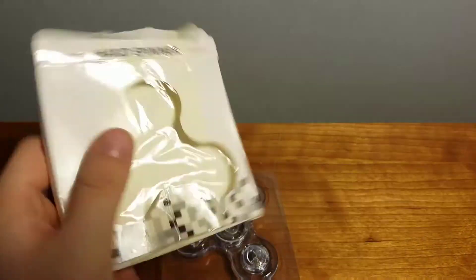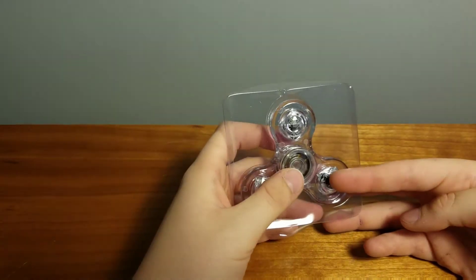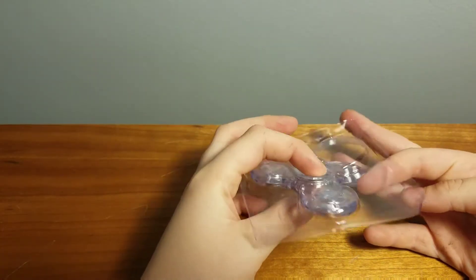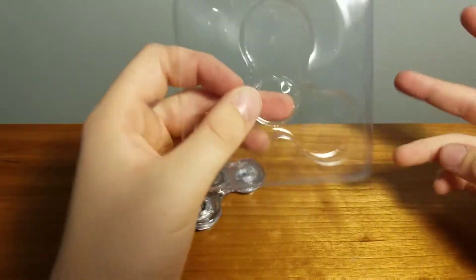Here we have the box over there and here we have the spinner it's a normal tri spinner but has lights in it it looks a lot better after you take it out of the packaging and here it is.